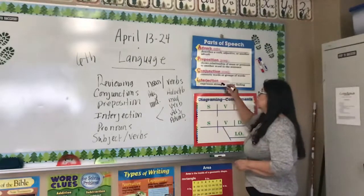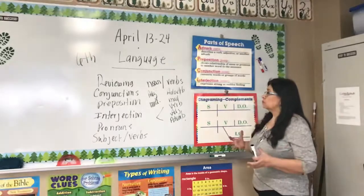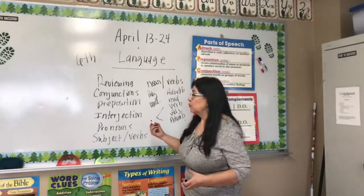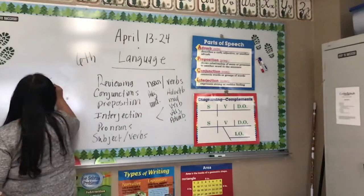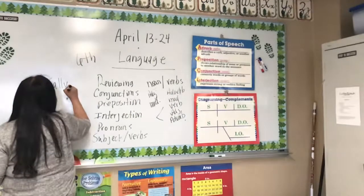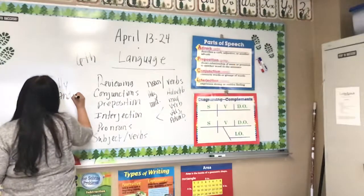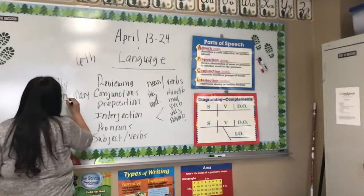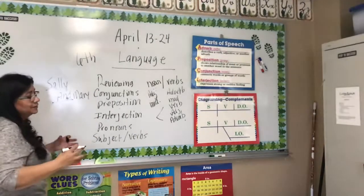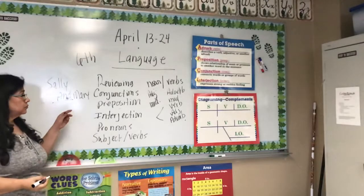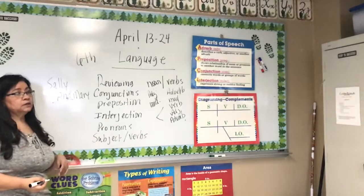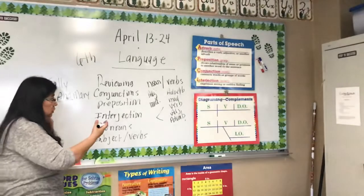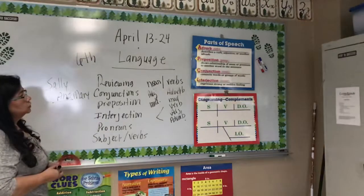Your conjunctions are words that connect — like if you write 'Sally and Mary.' Your conjunctions are always going to be the words that connect two sentences together. It could be 'and,' it could be 'but,' it could be 'or,' or different words. As long as it's connecting, that's going to be your conjunction.